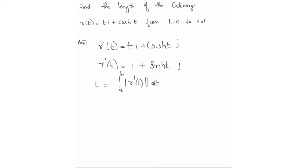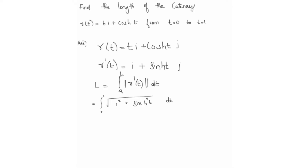The length L = integral from a to b of the norm of r'(t) dt. With the norm of r'(t) = square root of 1² + sinh²(t), the i, j, k components give us 1² + sinh²(t). So the integral becomes: integral from 0 to 1 of the square root of 1 + sinh²(t) dt.